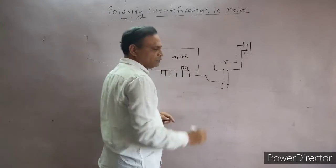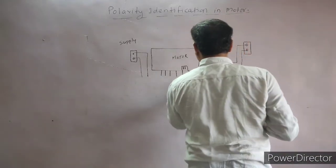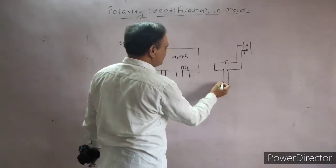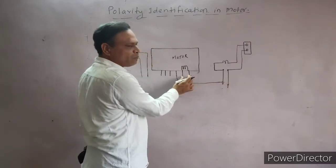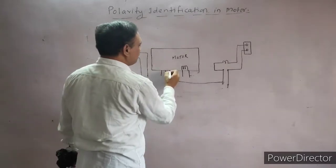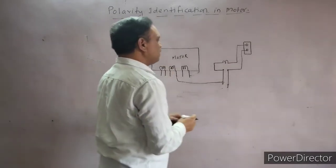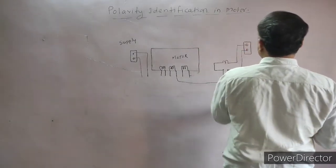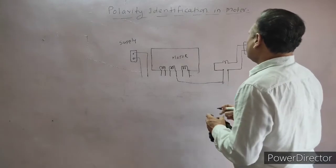Where the lamp glows, that terminal indicates a coil between the fixed terminal and the movable terminal. Let us say the coil has been found at this terminal — so there is a coil between these two terminals. Similarly, we do the same for all remaining terminals. We keep one fixed, move the probe through the remaining wires, and where the lamp glows, that's the other end of the next coil.